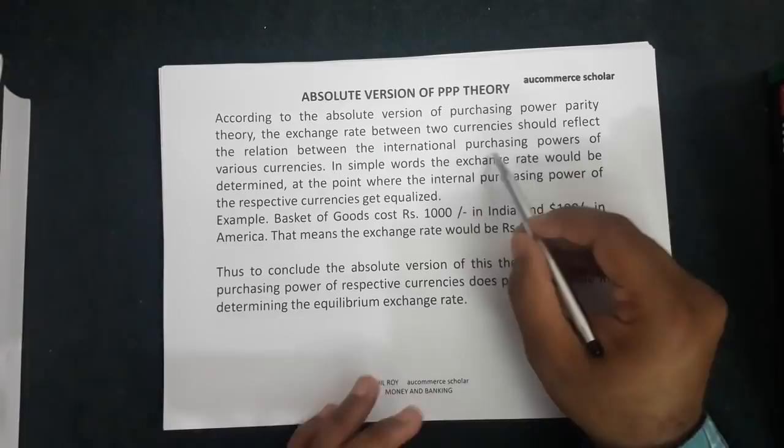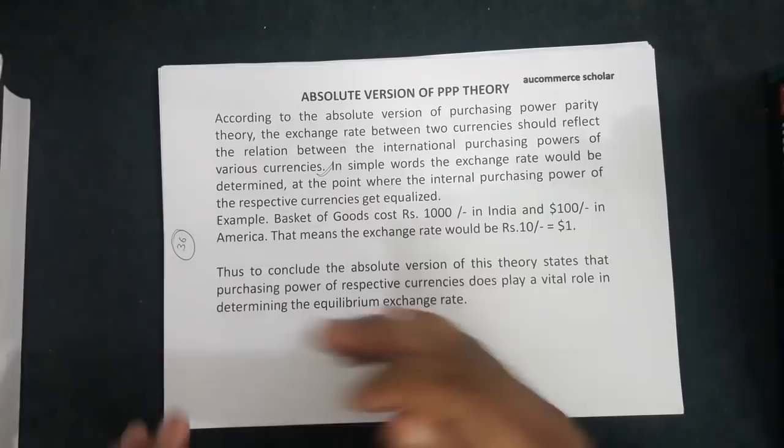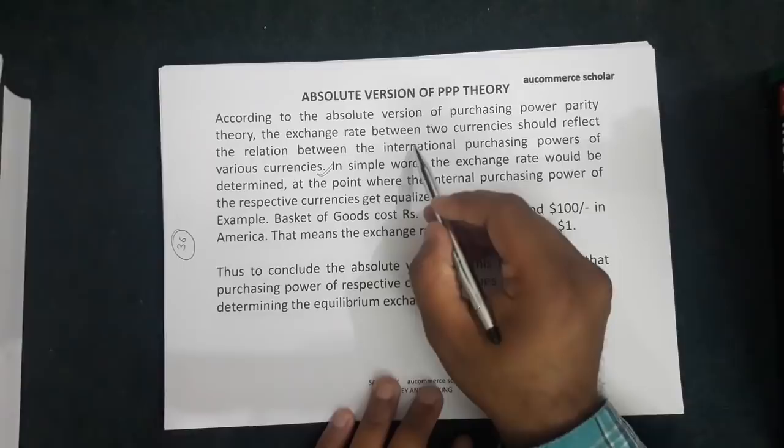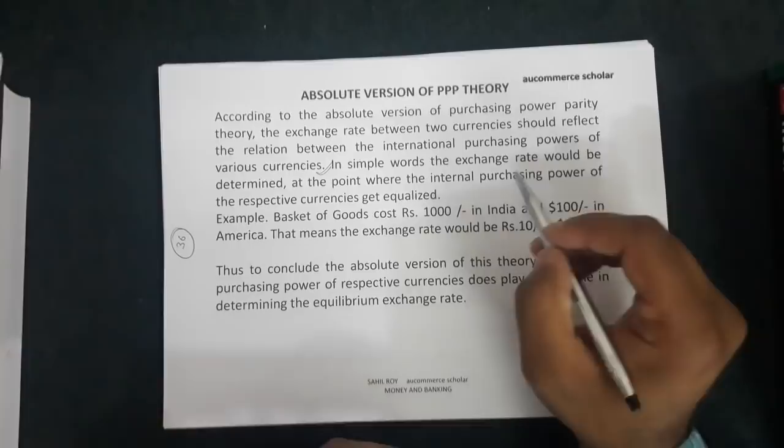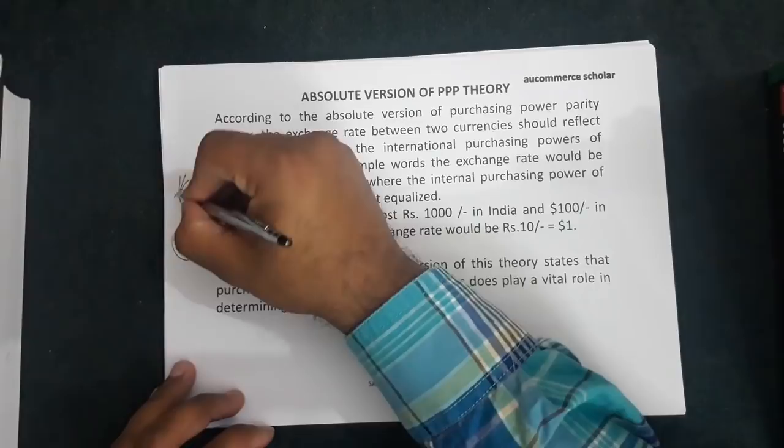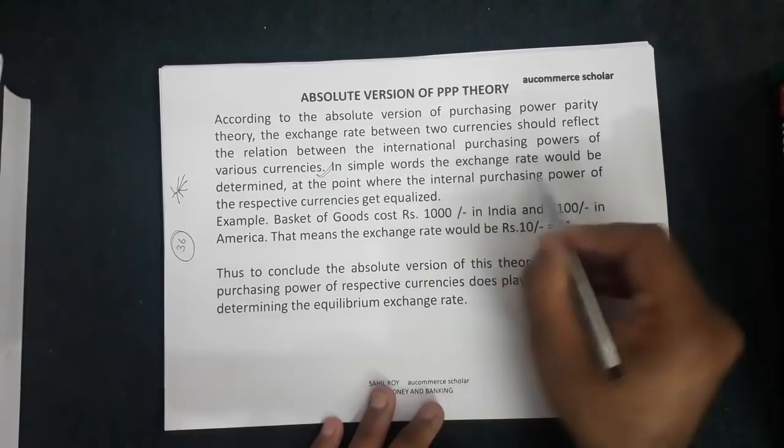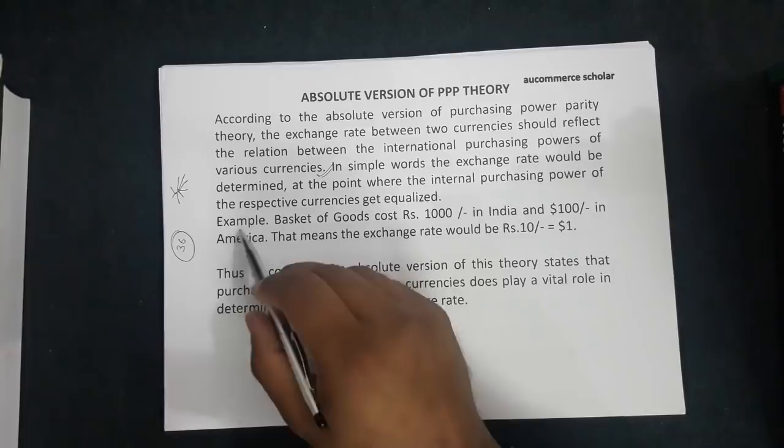Approximately 36 currencies are used for international trading, purchase, sale, import, and export. The exchange rate between two countries' currencies should reflect the relation between the international purchasing power of the various currencies. In simple words, the exchange rate would be determined at the point where the internal purchasing power of the respective currencies gets equalized.